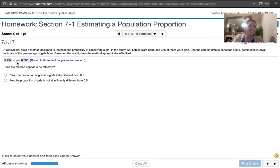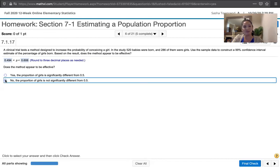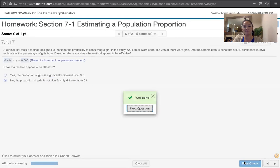But it's not. 0.5 is actually in that range. So the proportion of girls is not significantly different from 0.5. So that's our answer there. And again, it's because the 0.5 is in the range that we're saying that the proportion is not significantly different from that 0.5. And that's it.